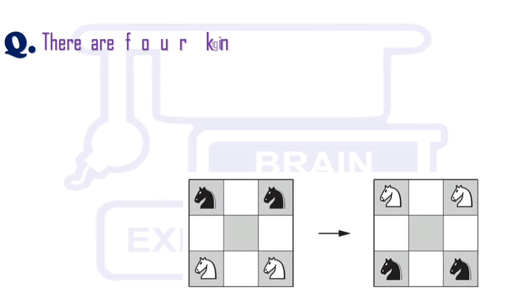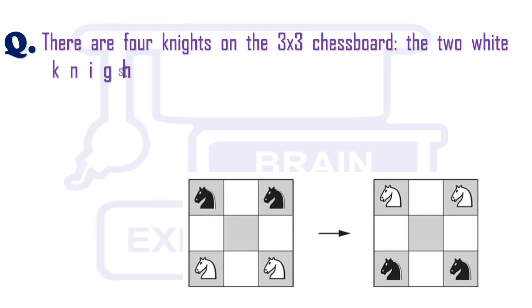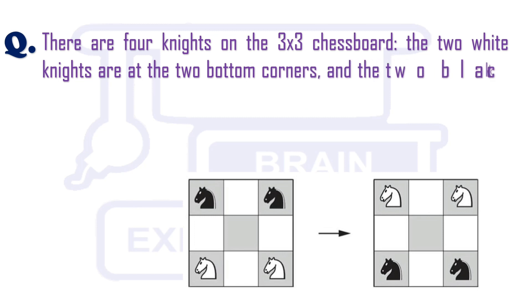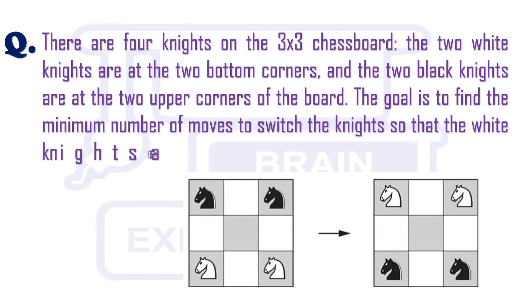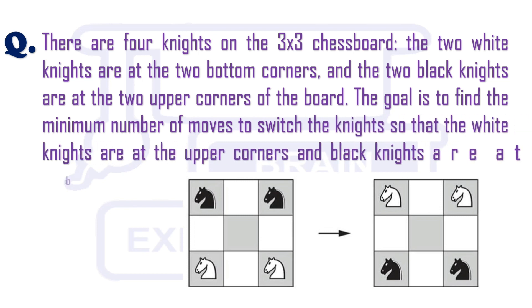There are 4 knights on the 3x3 chessboard. The 2 white knights are at the 2 bottom corners and the 2 black knights are at the 2 upper corners of the board. The goal is to find the minimum number of moves to switch the knights so that the white knights are at the upper corners and black knights are at the bottom corners.